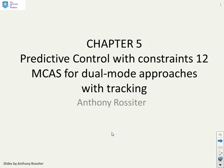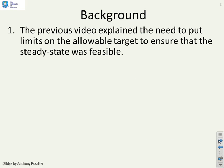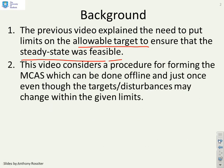This video introduces more formal methods for finding an MCAS when there is a tracking problem. The previous video explained the need to put limits on the allowable target to ensure that the steady state was feasible.